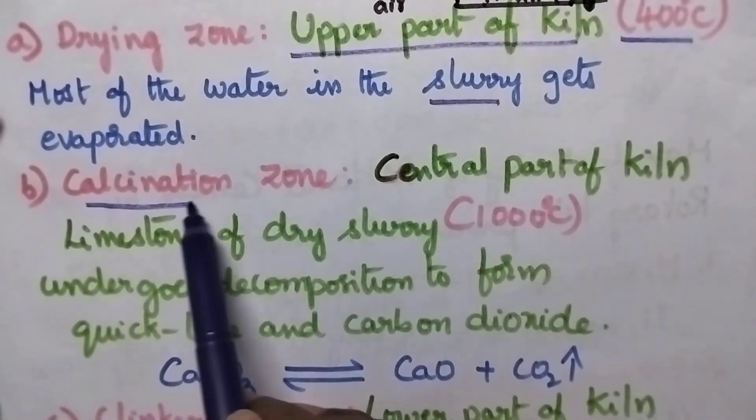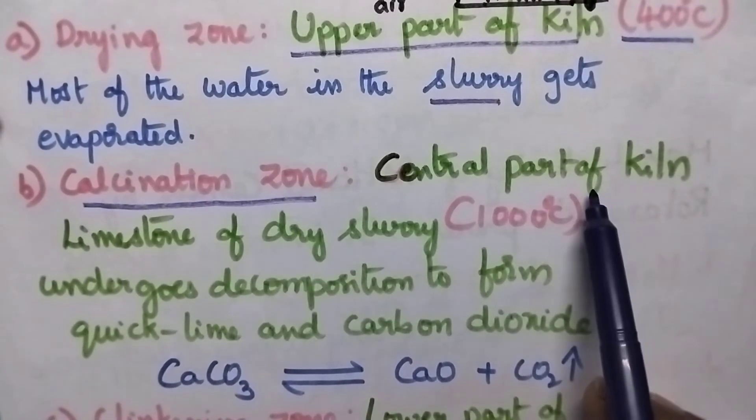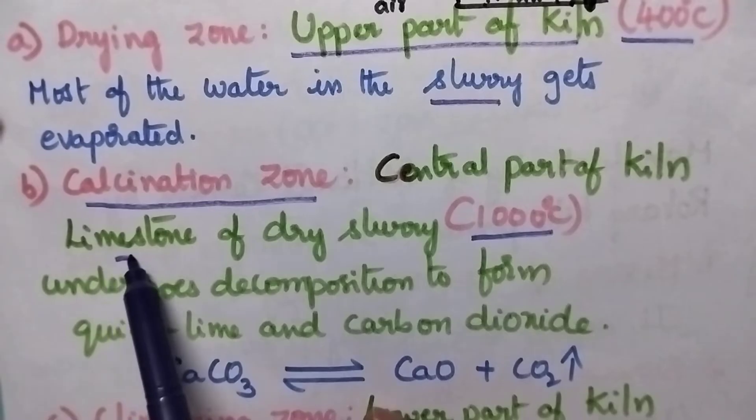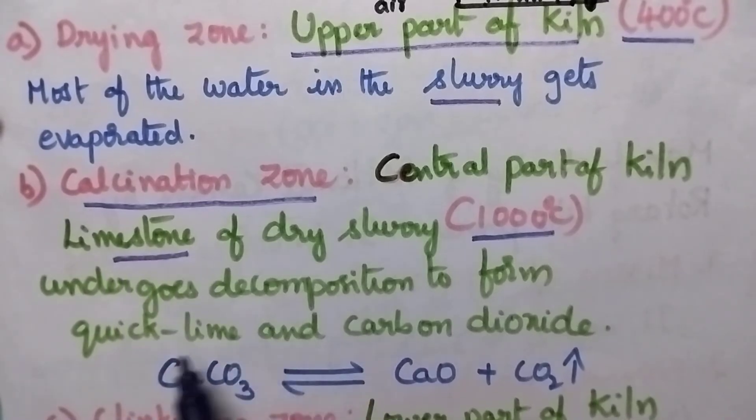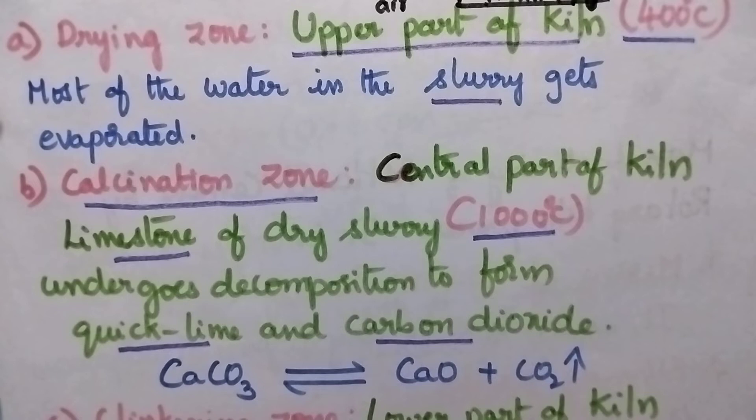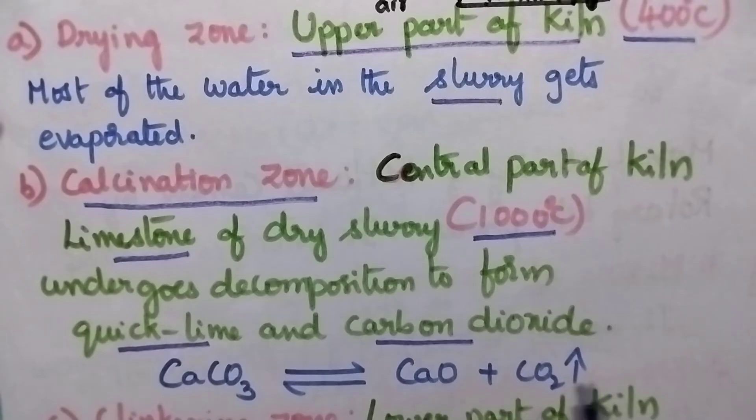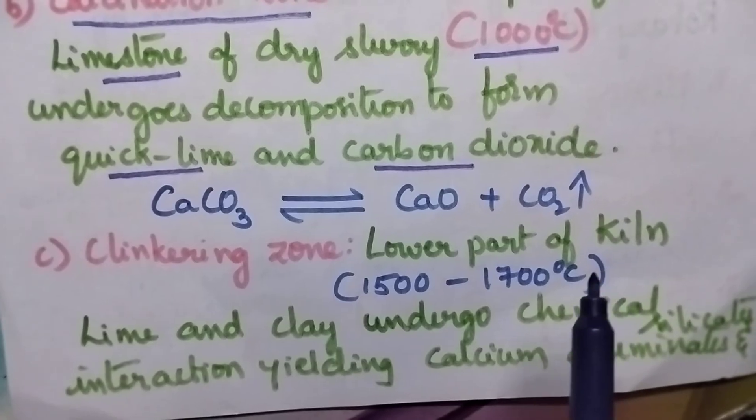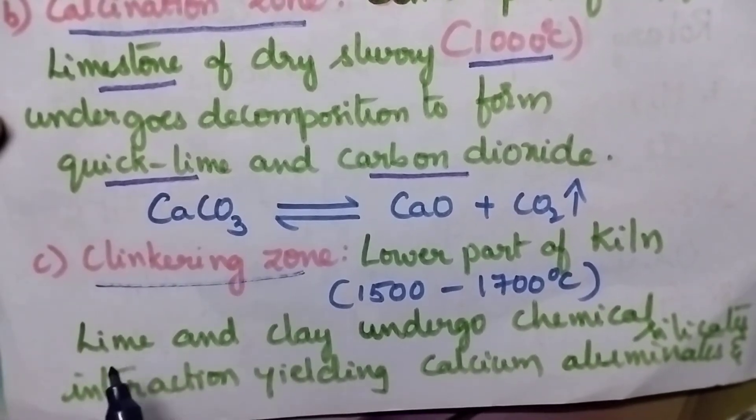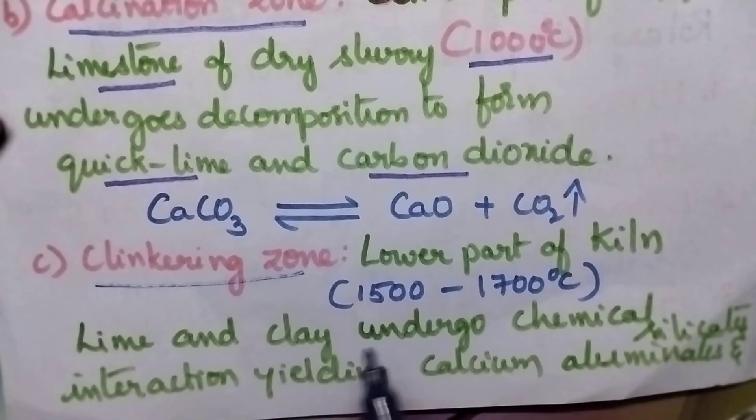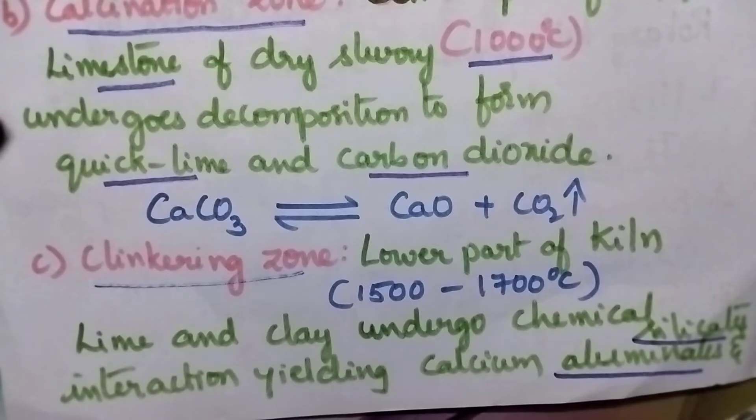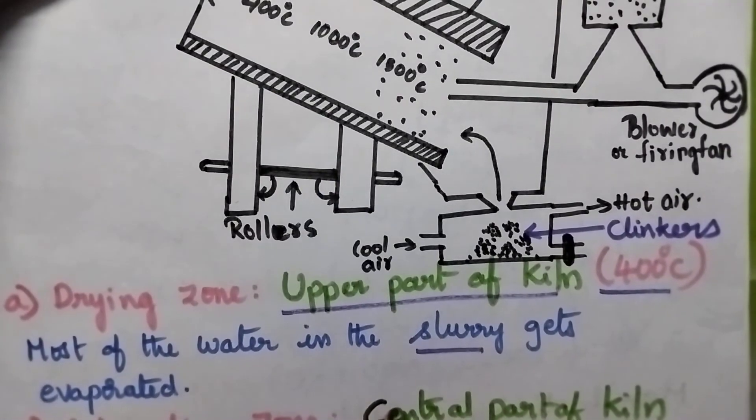Second zone is the calcination zone, the central part of the kiln where 1000 degrees centigrade is maintained. Here mainly limestone is converted into quick lime and carbon dioxide. The limestone undergoes decomposition to form quick lime and carbon dioxide. The final zone, the lower part of the kiln, is the clinkering zone. Here the lime and clay undergo chemical interactions, resulting in the formation of aluminates and silicates, together called clinkers.